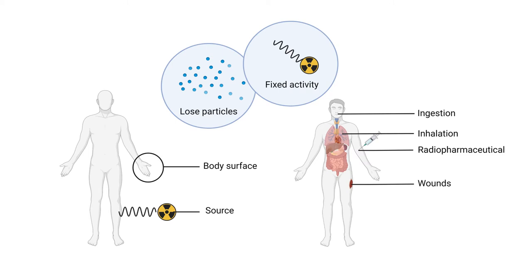There are differences between loose particles and fixed activity. Loose particles that are radioactive can be inhaled or ingested and can be dangerous because they are taken into the body and expose critical organs. Fixed activity refers to surfaces that are contaminated. There is also the issue of where you are exposed to radiation: from a source irradiating your body from the outside, on the body surface such as contaminated hands requiring decontamination, or internalized into the body by ingestion, inhalation, through wounds, or radiopharmaceutical injection — which is more dangerous and cannot be removed, so it has to be either excreted or decayed.